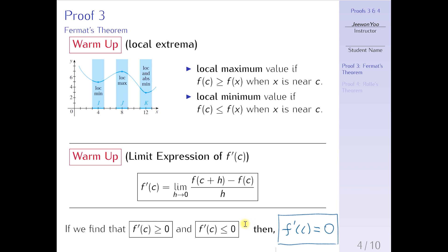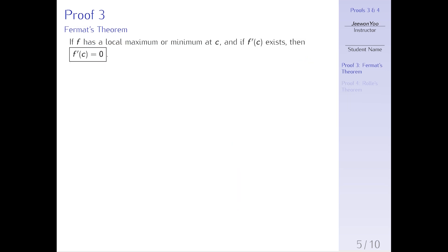I think we are ready now. Let's jump right in to prove Fermat's theorem. We want to prove the statement: if f has a local maximum or local minimum at c, and if f is differentiable at c, then f'(c) must be equal to 0. Before we begin, I'm going to consider two cases. I'm only going to use case 1 for today's proof. Case 1 is when we assume f has a local maximum, and case 2 is when we assume f has a local minimum.